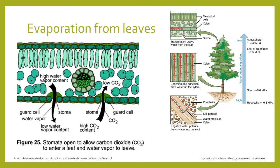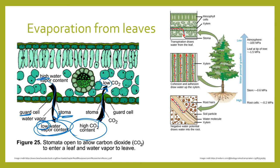Once water reaches the leaves through the xylem, evaporation happens through the stomata. Stomata are openings guarded by guard cells that can shrink and swell to close and open the stoma. Plants sometimes want to keep stomata closed to hold on to water. Water exits by diffusion — there is a lower concentration of water outside the plant than inside, so water diffuses out through the stomata. The opposite happens for CO2: CO2 concentration is higher outside and lower inside, so CO2 diffuses into the cell through the stomata when the guard cells are open.